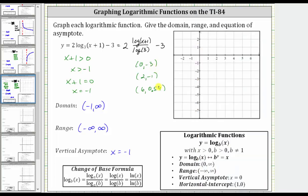Actually, before we plot these points, let's sketch the vertical asymptote of x equals negative one, which is this vertical line here.